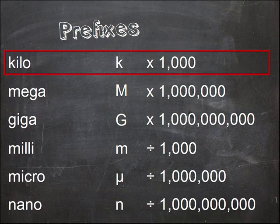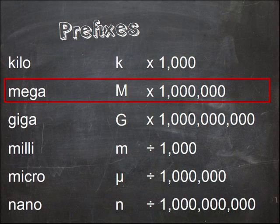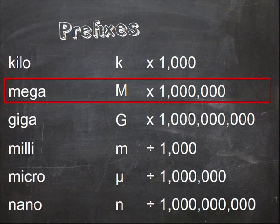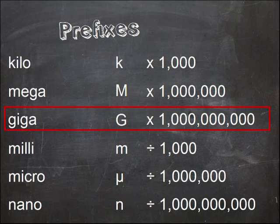Wee k is for Kilo, and it means a thousand times bigger. Capital M is for Mega, which is a million times bigger. Capital G is for Giga, which is a billion times bigger.